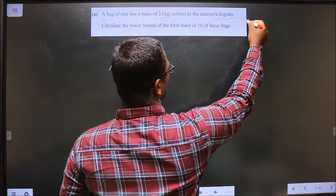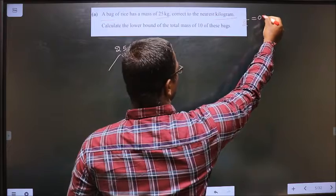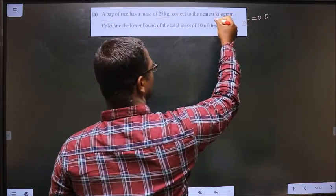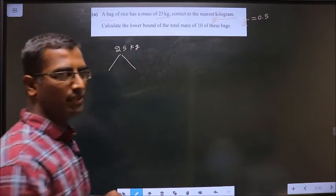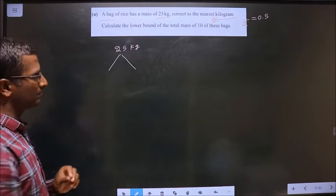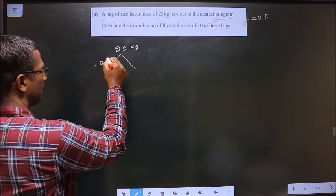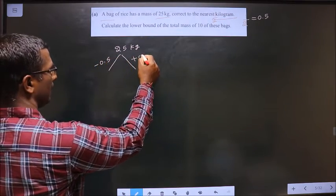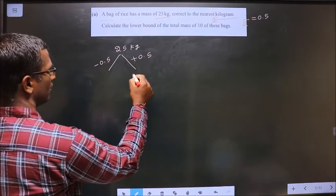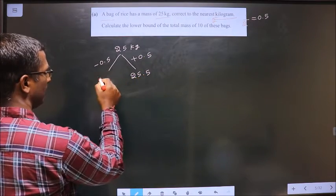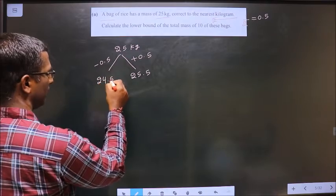So, half is 0.5. Here it is 1, so half, 0.5 we get. Clear? That you subtract and add. So, what do we get? We get 25.5 here and here 24.5.